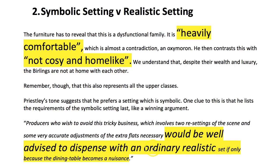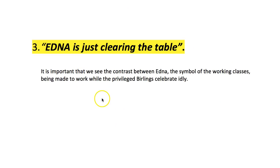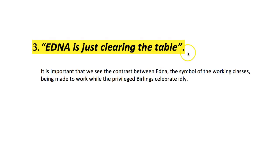The next point Priestley wants to bring to our attention is Edna, who is just clearing the table. Visually on stage she represents the working woman — she is hard at work and will be completely ignored by the other characters. Her presence on stage is a reminder of the lack of interest these upper-class men and women have in the lives of ordinary people. She is there so we can visibly see her being ignored and subservient to the family, who react without gratitude — simply with an air of expectation.